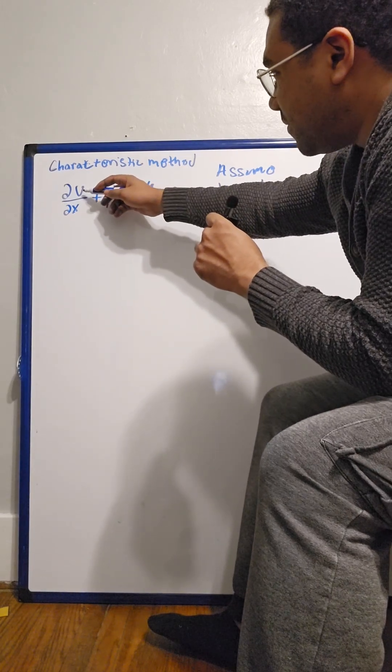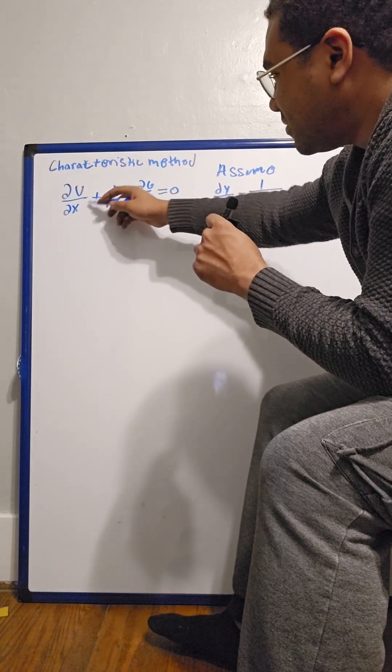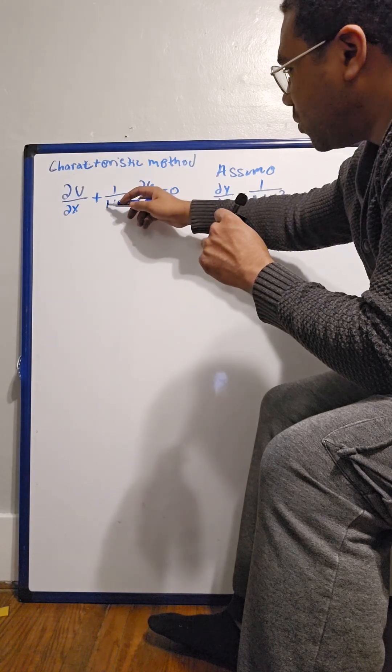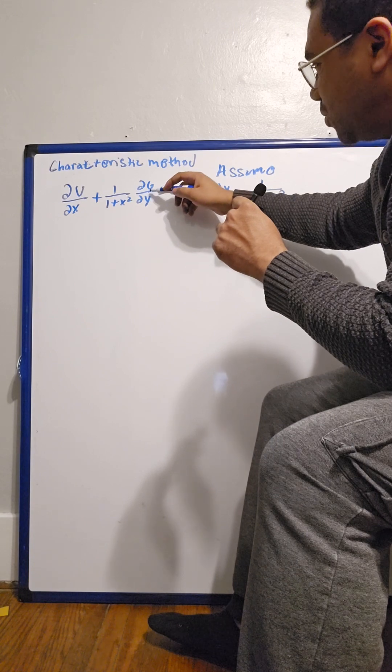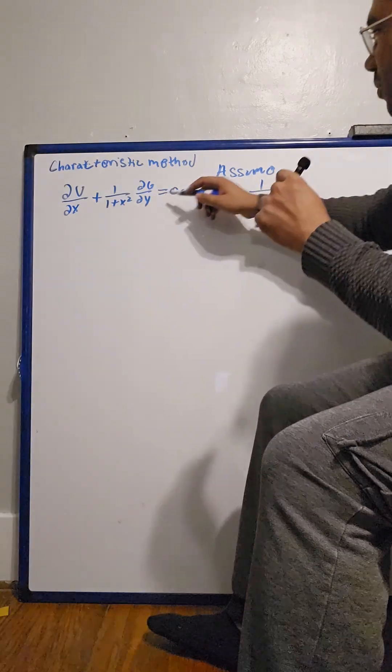We have the partial derivative of u with respect to x plus 1 over 1 plus x squared times the partial derivative of u with respect to y equaling 0.